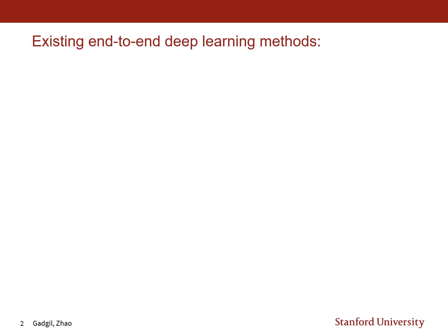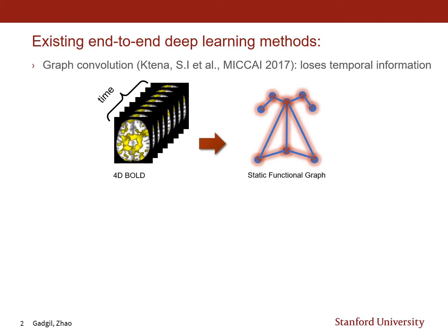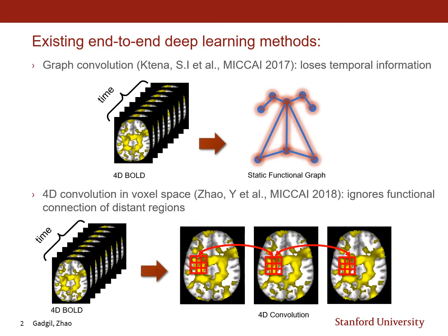There have been some existing deep learning methods which have tried to accomplish this task. The first one involves graph convolution, however it loses temporal information since it does not consider the 4D nature of the BOLD signal. The second one is a 4D convolution in voxel space, however since it does not consider a graph structure it ignores the functional connections of distant regions which might be important for prediction.